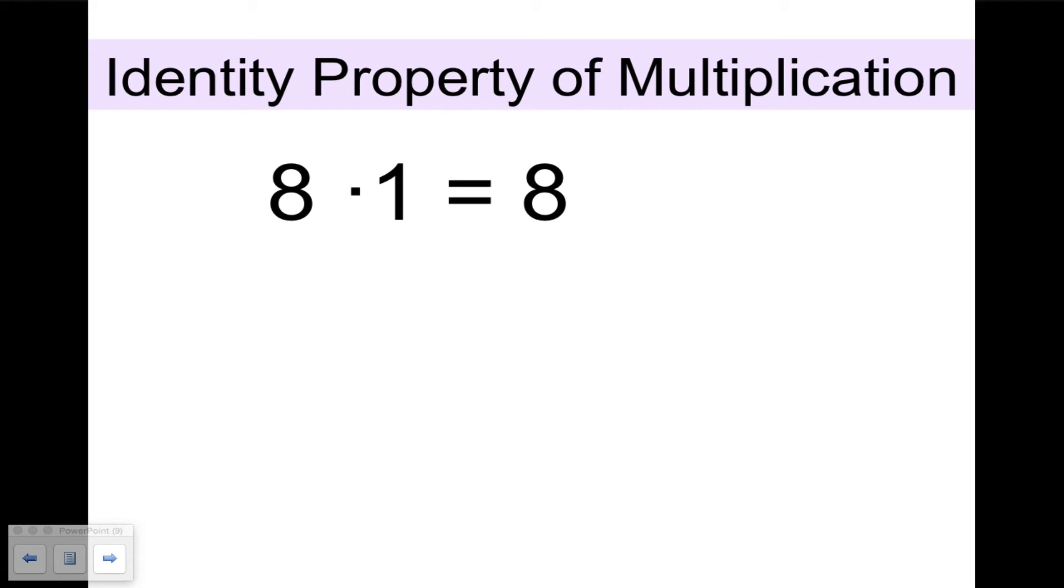The identity for multiplication is 1 because that's the number that makes any number multiplied stay as itself. Any number times 1 equals itself. The multiplicative identity is 1.